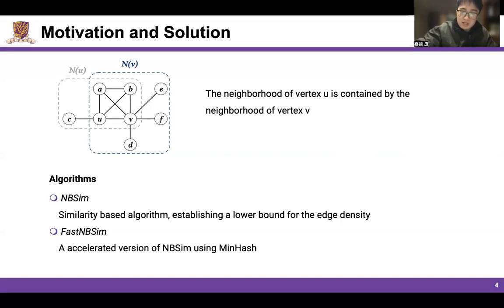We utilize this characteristic and develop two efficient algorithms to find large quasi-cliques. The first algorithm, NBSim, uses similarity to establish a lower bound for the edge density. For the second algorithm, FastNBSim, we utilize MinHash to accelerate the algorithm.